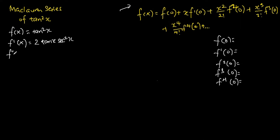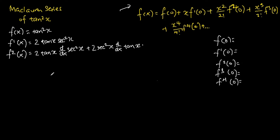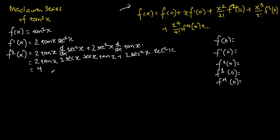Next, we find the function differentiated two times. Using the product rule, we get 2 tangent x times the derivative of secant squared x, plus 2 secant squared x times the derivative of tangent x. For the first term we get 2 tangent x times 2 secant x times secant x tangent x, and the second term gives 2 secant squared x times secant squared x. This simplifies to 2 secant to the power of 4 x.